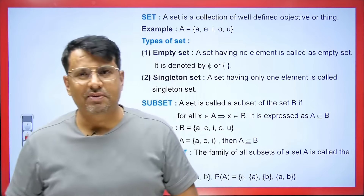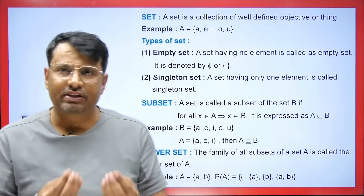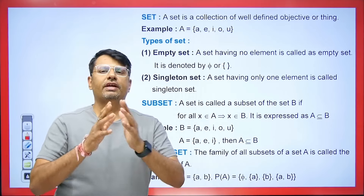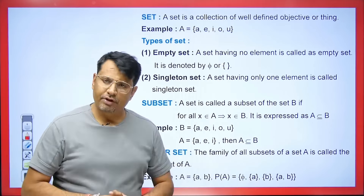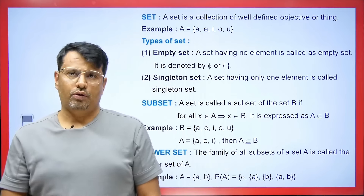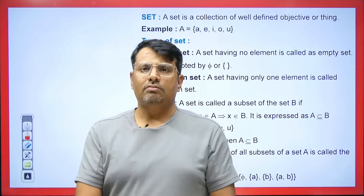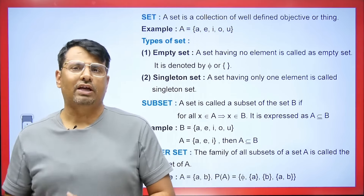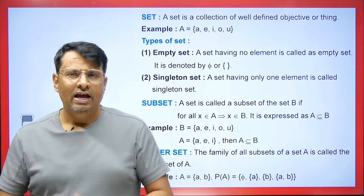Now we will talk about sets. Sets has a very simple definition which we learned in 11th grade. What is a set? A set is a collection of well-defined objects. For example, if I ask you what are the vowels in the alphabet, you know what they are. If I ask you what are the even numbers from 1 to 100, or the odd numbers, or prime numbers, or numbers divisible by 3 — these are all well-defined objects. The collection of all of these will be a set.